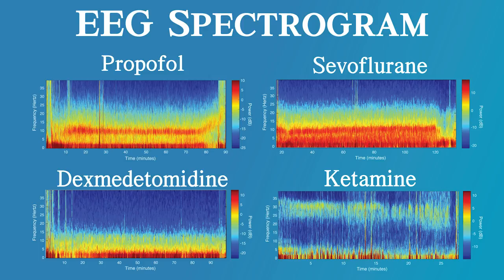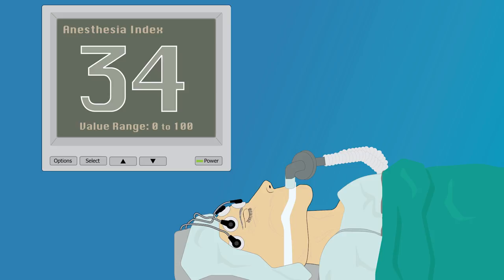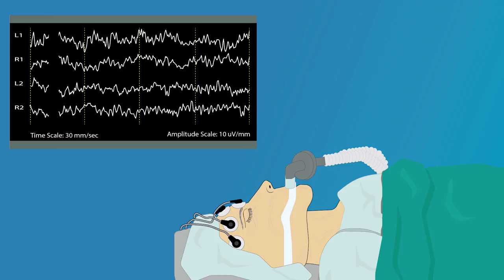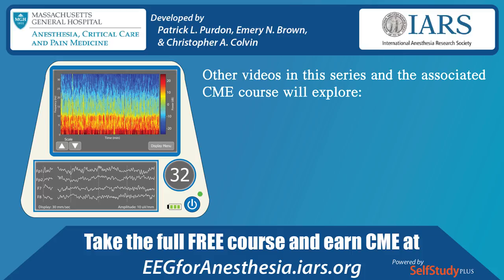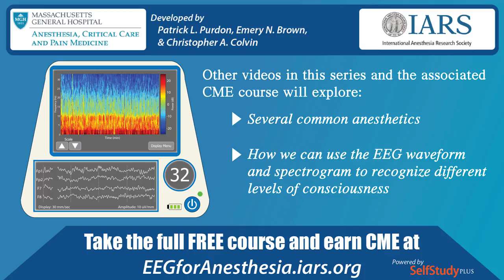Looking at the spectrogram, each drug can appear visually distinct from one another, which makes sense because we know they act through different mechanisms to induce anesthesia. As it turns out, the EEG signal may not be too hard to visually decipher, especially considering that several current brain monitors are capable of displaying this spectrogram in addition to the EEG waveforms. Other videos in this series and the associated CME course will explore several common anesthetics and how we can use the EEG waveform and spectrogram to recognize different levels of consciousness.